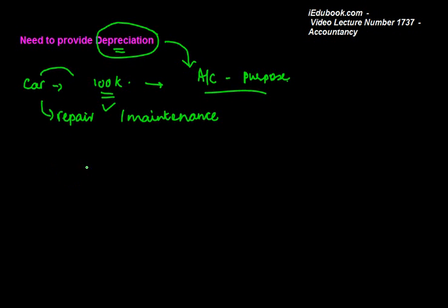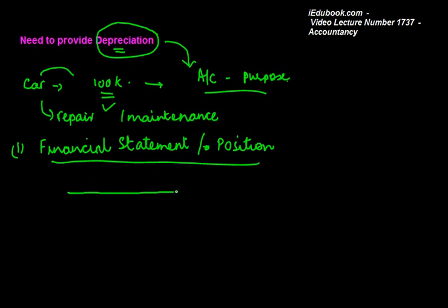Now there are several reasons for this, but I will concentrate on three or four key reasons. The first reason is the financial statement position. When you prepare your balance sheet, you declare - let's say for example we're talking about car only - you will declare car at 100k. But let's say for example you reach year three.